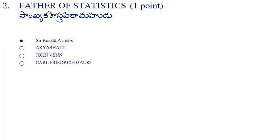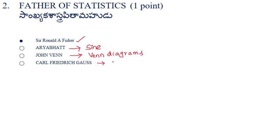The next question: who is the father of statistics? We know that the father of statistics is Sir Ronald A. Fisher. Among other options, Arya Bhatta is the Indian mathematician who gave the base of the word 'sine'. John Venn and Euler are related to Venn diagrams. Karl Friedrich Gauss is related to the sum of first n terms of an AP.